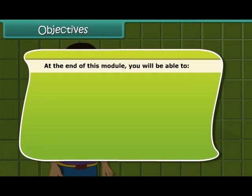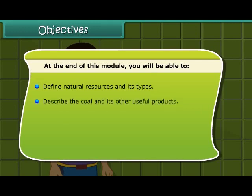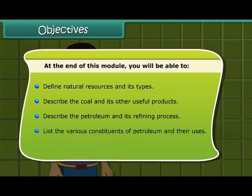At the end of this module, you will be able to: define natural resources and its types; describe coal and its other useful products; describe petroleum and its refining process; list the various constituents of petroleum and their uses; and describe natural gas and its importance.